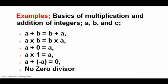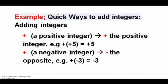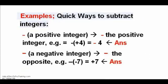Examples and basics of addition and multiplication of integers using variables a, b, and c. Quick ways to add: plus a positive integer gives a positive result; plus a negative integer gives a negative result. Quick ways to subtract: a minus sign applied to a positive integer gives a negative result.